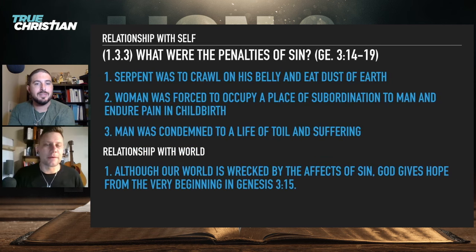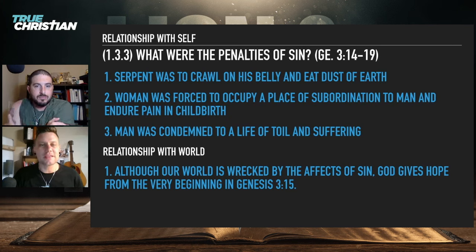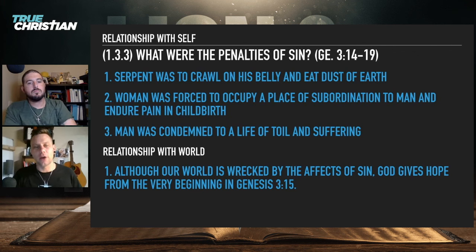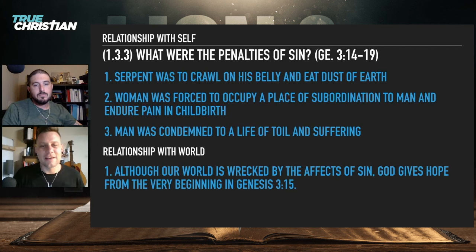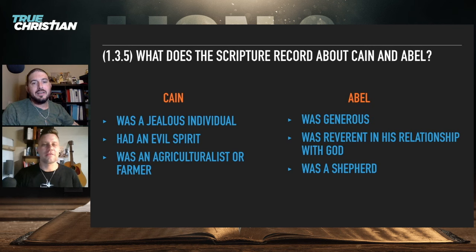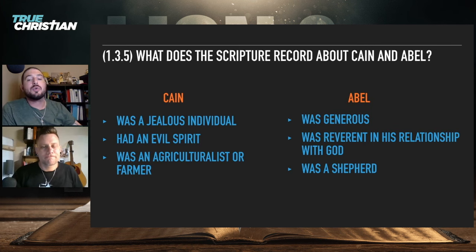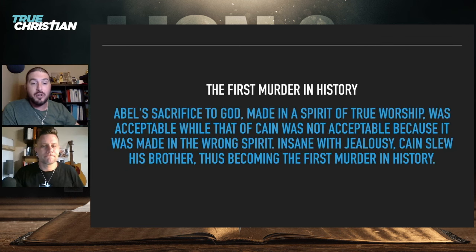The penalties of sin in Genesis 3:14–19: the serpent was to crawl on his belly and eat dust; woman was forced into subordination to man and endure pain in childbirth; man was condemned to a life of toil and suffering. And — our world is wrecked by the effects of sin, but God gives hope from the very beginning: 'His heel will crush the serpent's head' in Genesis 3:15. After sin entered, Cain was a jealous agriculturalist who gave the works of his hands; Abel was generous, reverent, and a shepherd — he gave a lamb, a little foreshadow there.